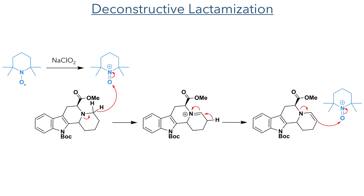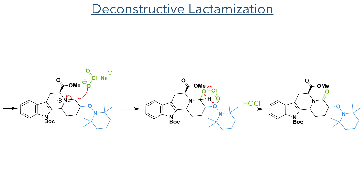This is able to abstract a hydride from a carbon adjacent to the tertiary amine, and the resulting aminium species then forms an enamine which attacks another equivalent of the oxoammonium species. The aminium intermediate that is formed by this step is then attacked by sodium chlorite, and an oxidation to form a lactam can then occur in a mechanism similar to that of the Pinnick oxidation.